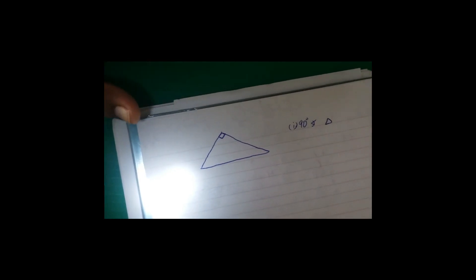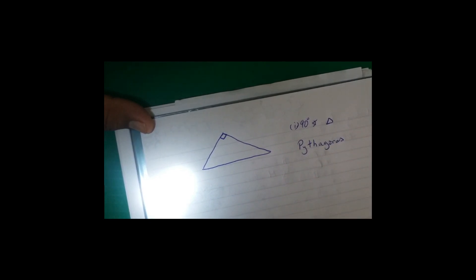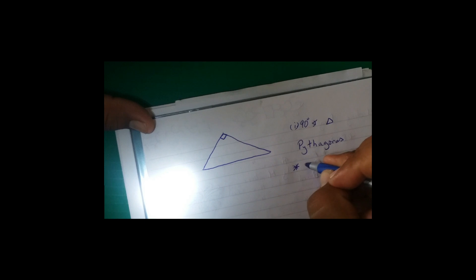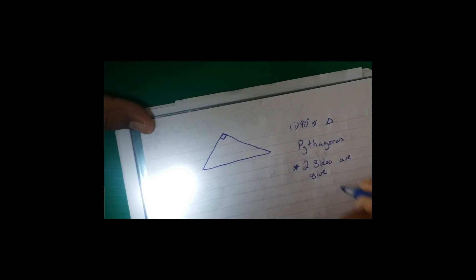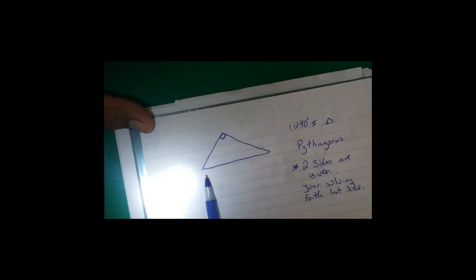Now we want to use Pythagoras. In order for us to use Pythagoras, it says that if it is a 90 degrees triangle and two sides are given, you are solving for the last side. That's very important.